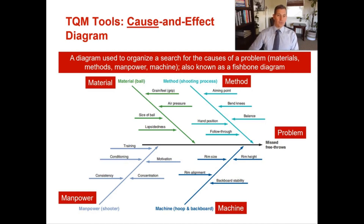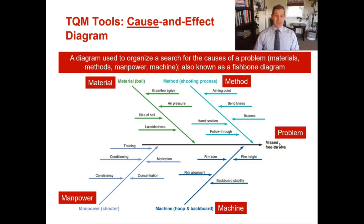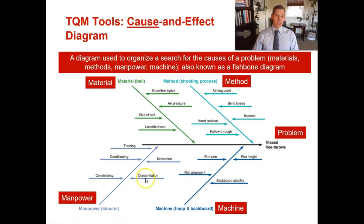Looking at the fishbone diagram example: if the problem is missing free throws, let's say I'm a 60% free throw shooter. Is it a manpower issue — am I not concentrating, not motivated, not trained well, or out of shape? Or is it a materials issue — maybe the ball has no grip, the air pressure is wrong, or I'm using the wrong size ball?